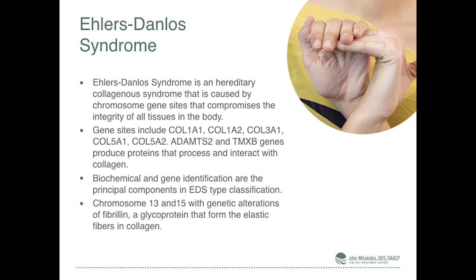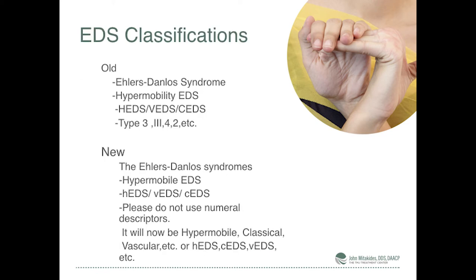Last May we had an international conference in New York where we determined further areas — we picked up chromosome 13 and other gene sites. We're now up to 29 gene sites that are compromised that can cause this condition. For pure diagnostics, gene identification is the principal way to go. The classifications have changed — from numbers and letter types down to purely hypermobile, vascular, or connective tissue: HEDS, VEDS, and CEDS, with descriptors on top of that.